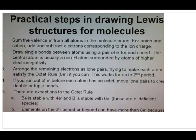The first thing to do is add all the valence electrons from all the atoms in the molecule or ion. The important thing to note is that if you have an anion, you're going to add the electrons that correspond to the ionic charge — so if you have an A minus at the end, you add one more electron. If you have a cation, you subtract electrons corresponding to the ionic charge.